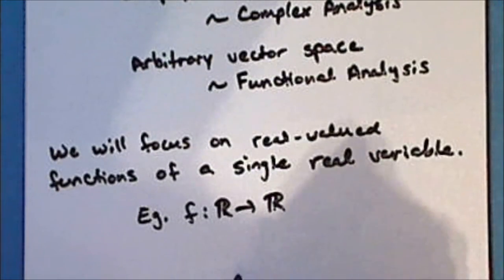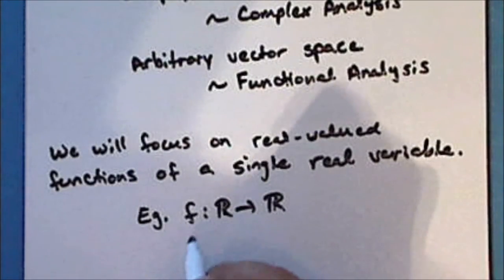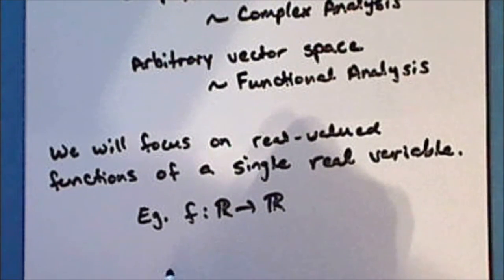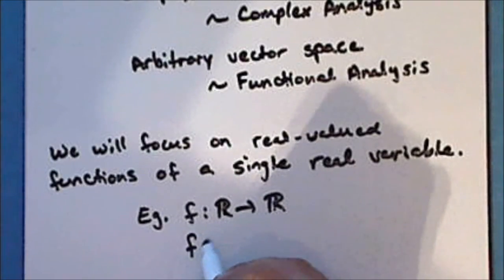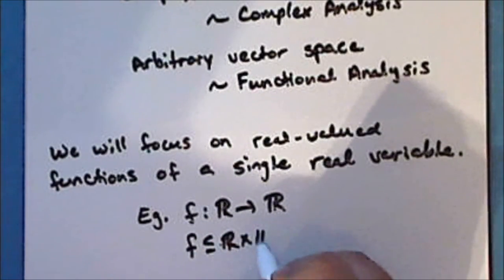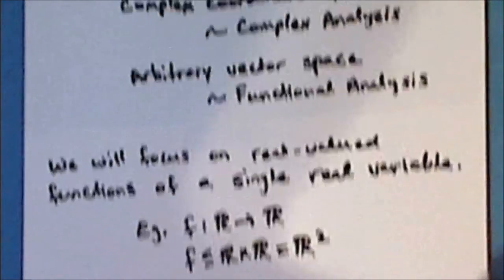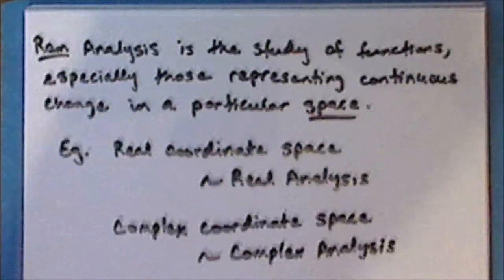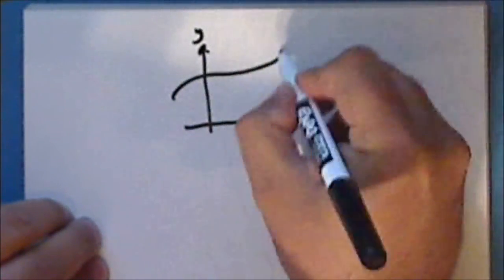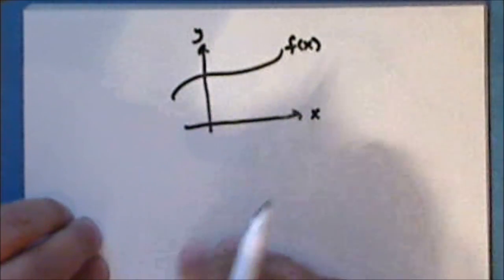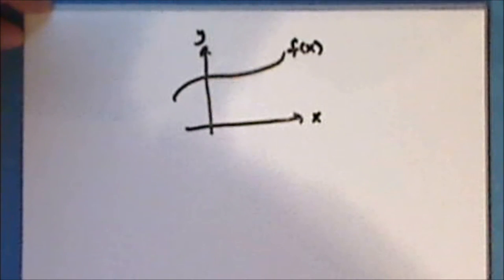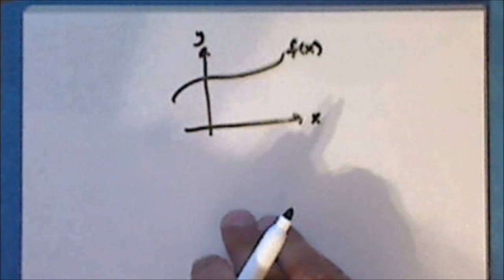For example, a function is a special type of relation. And so a real-valued function of a single real variable is a subset of the Cartesian product of the real line with itself, which is the real plane. And so typically, the graph of such a function is a curve in the plane, a one-dimensional object that lives in a two-dimensional space.